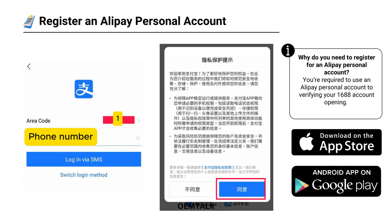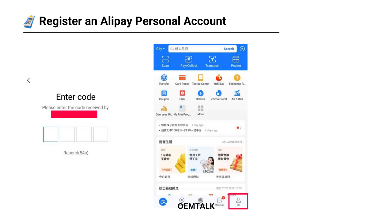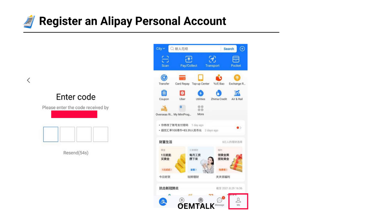After tapping Log in via SMS, Alipay will send a four-digit code to your phone. Enter the code in the app. And that's it — your account is now created. However, it's not verified yet. Let's move on to that step.